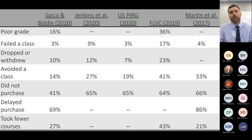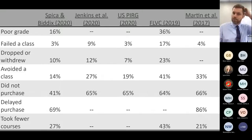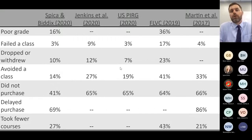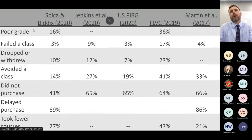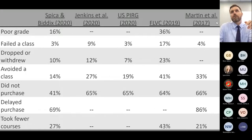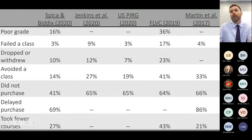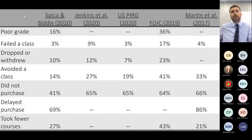I've pulled together a table of results from several recent studies about the effect of textbook costs on student choice. When you have the link to the slides, these studies are all hyperlinked. I want to highlight a couple of things. Here are several of the barriers attributed to high textbook costs: grades, failing a class, dropping or withdrawing from a class, avoiding classes, not purchasing materials, delaying the purchase of materials, or taking fewer courses.